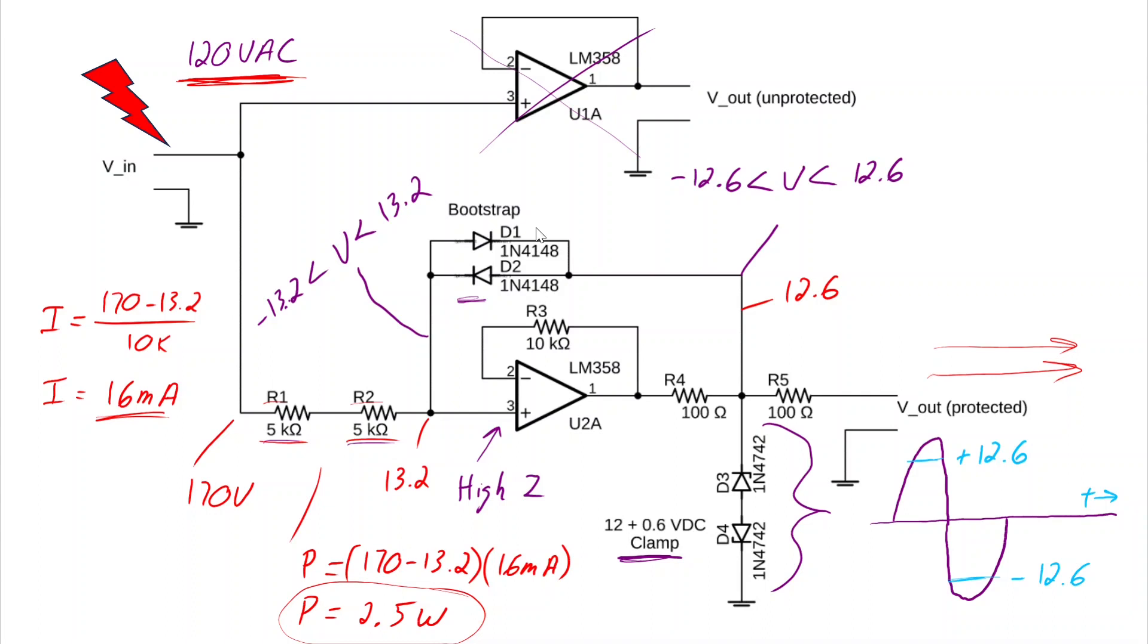Let's look at the diodes. Are they going to survive? No concerns there, as I believe they're rated somewhere around 1 amp. And now let's look at the zener diodes. The maximum power dissipation there would be 12 times 0.016, which is only 0.2 watts, well within the ratings of those zener diodes. So it does look like this circuit would indeed survive an accidental 120 volts connection.